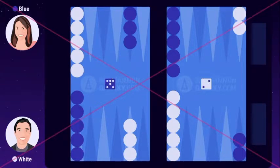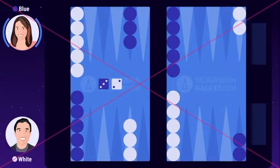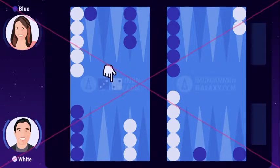Now white rolls 2, and blue rolls 3. The highest number wins the opening roll, so blue makes the first move using 3-2. She can either choose to combine the numbers and move one checker, or play the numbers separately and move two different checkers. Blue confirms the move by clicking on the dice.